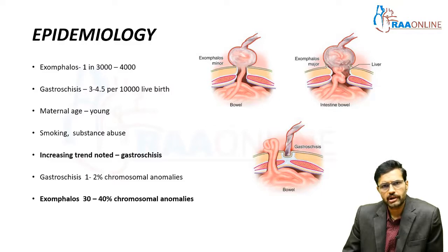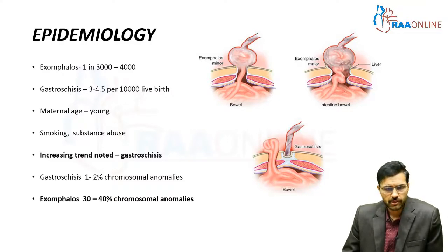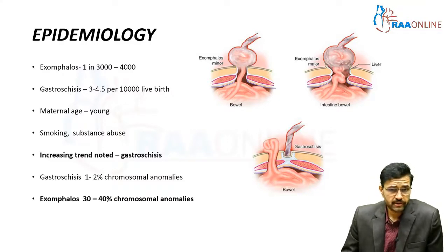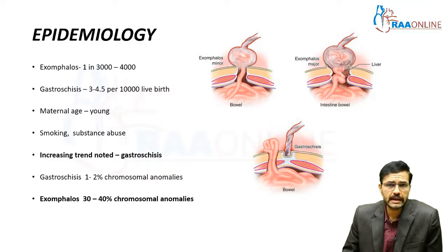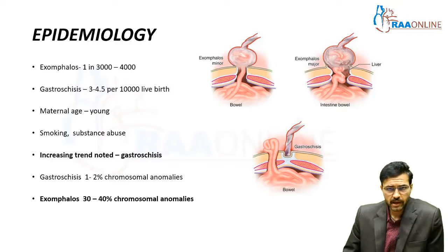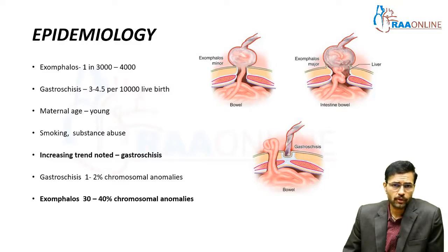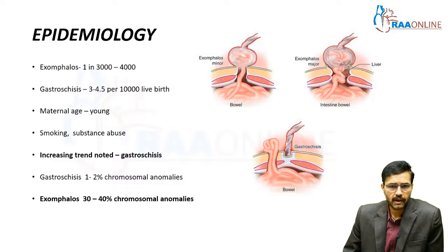Other factors which seem to predispose to abdominal wall defects in newborn children include smoking, substance abuse, etc. Gastroschisis has 1 to 2 percent associated chromosomal anomalies, whereas chromosomal anomalies are significantly higher in exomphalos, with about 30 to 40 percent of cases having chromosomal anomalies.